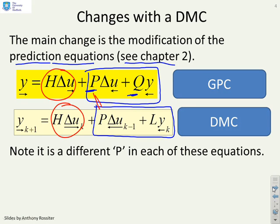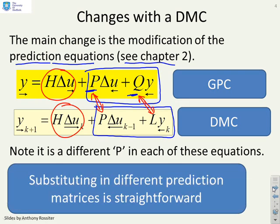Now what's different? These P's are actually not the same. I shouldn't really be using the same letter, but that's maybe sloppy. You'll notice I've got a Q going to an L and I have a different P. But if you look at the structure of the prediction equations, you see the structure is identical. And that tells you actually implementing a constrained version of DMC is going to be equivalent to a constrained version of GPC because the structure of the prediction equations is identical.